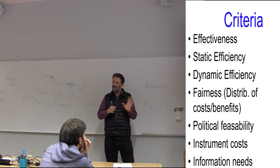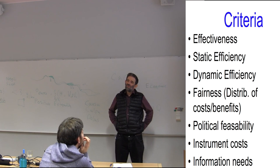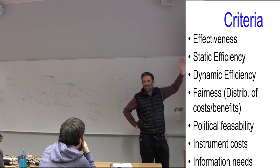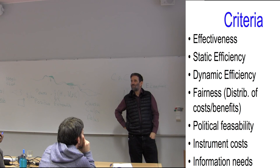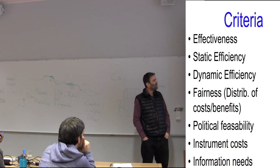We started by talking about why there is pollution, then what the menu of instruments is. There are two more lists I want to talk about. One is the criteria — if we're going to choose an instrument we need criteria. Economists have many words for efficiency, and most people spend almost all their time lecturing on it. Most books in environmental economics basically just talk about efficiency, and it's typically the most important.